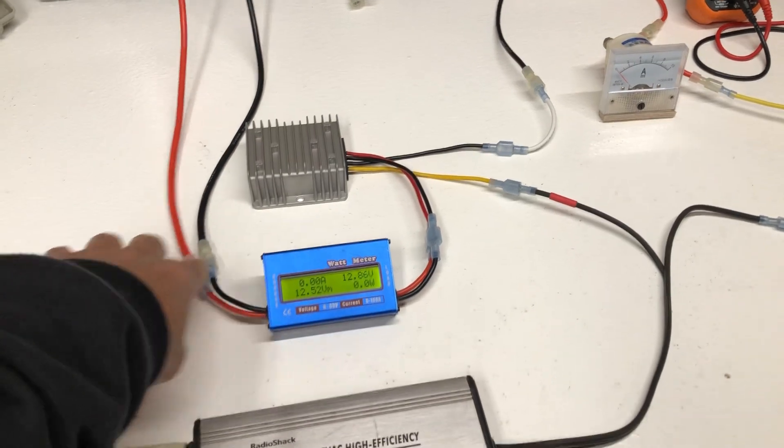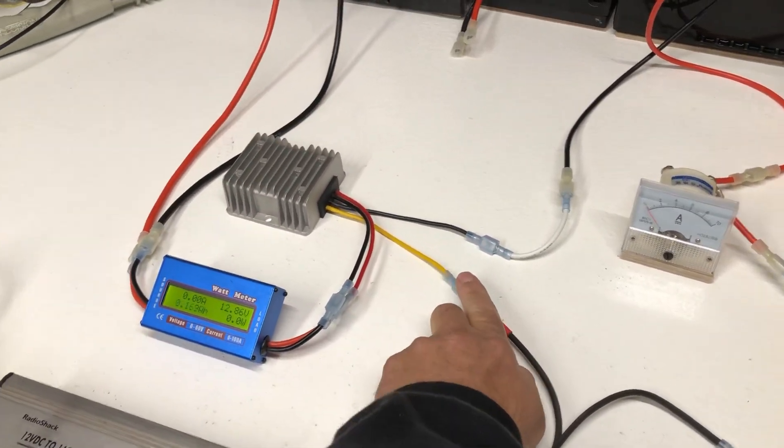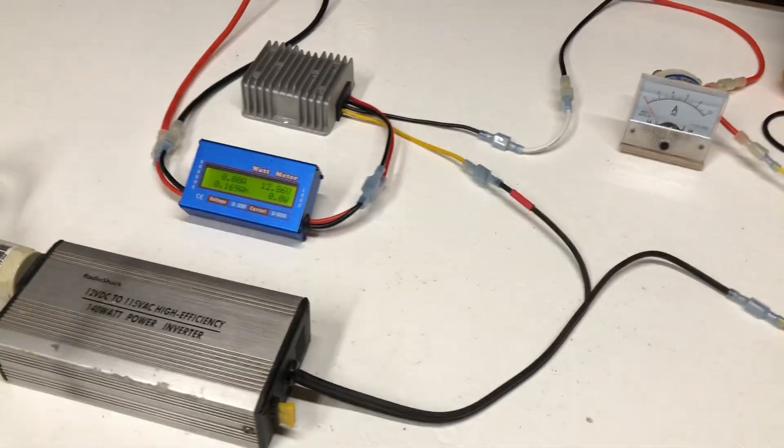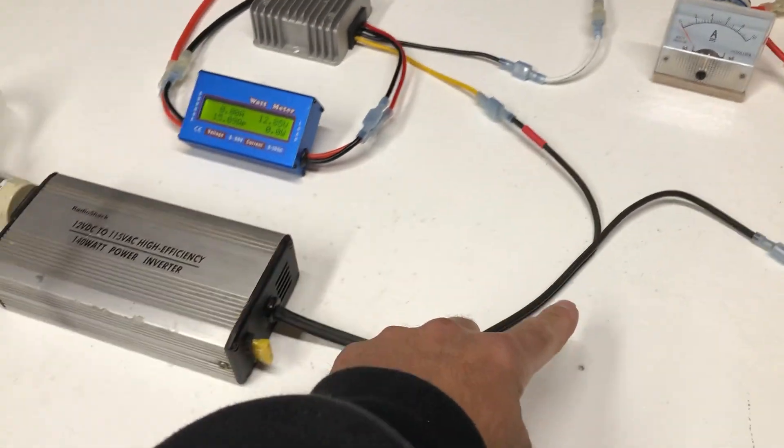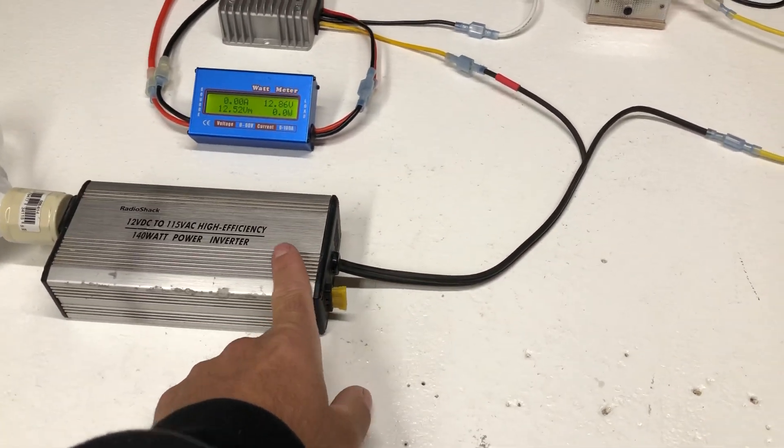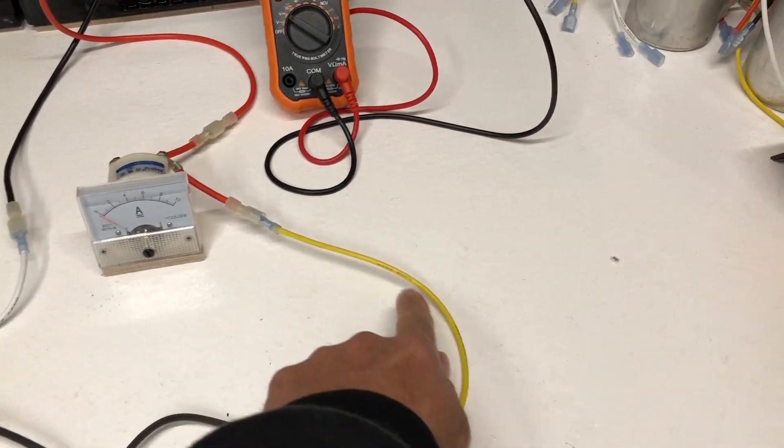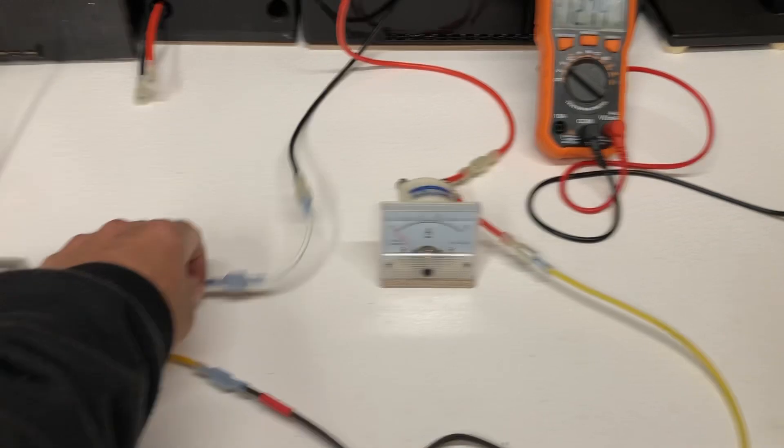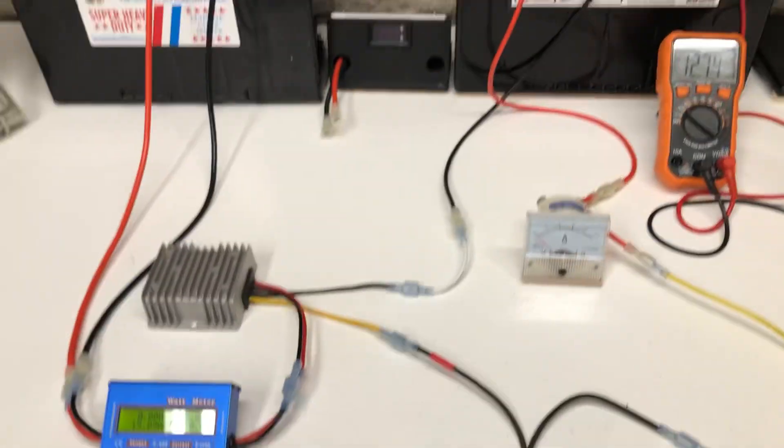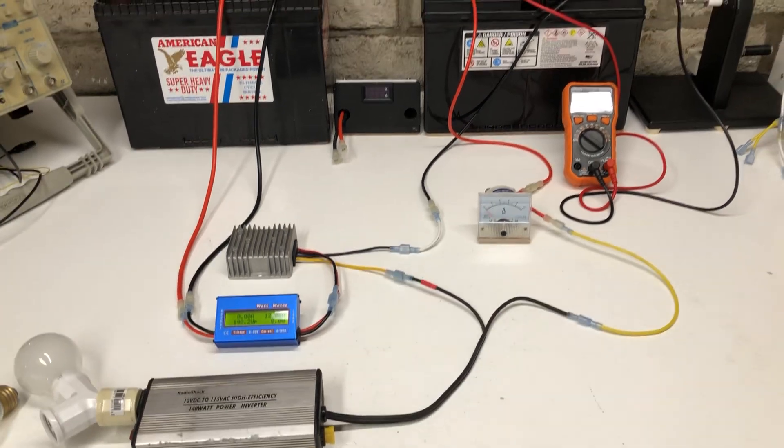The output of the voltage booster - the 24 volt booster - goes right here through the positive lead of the inverter. Then the negative lead of the inverter becomes the positive charging side of the second battery, and the negative just goes to the negative. Pretty simple. I don't think it really gets any simpler than that.